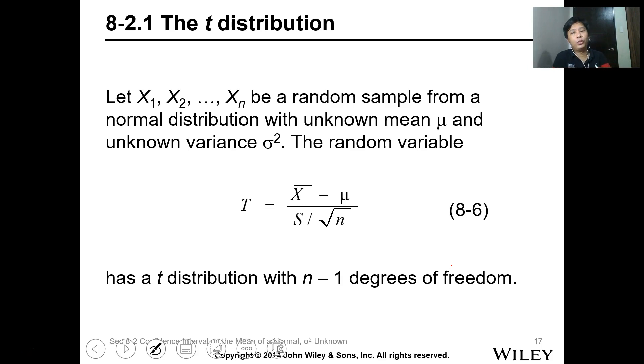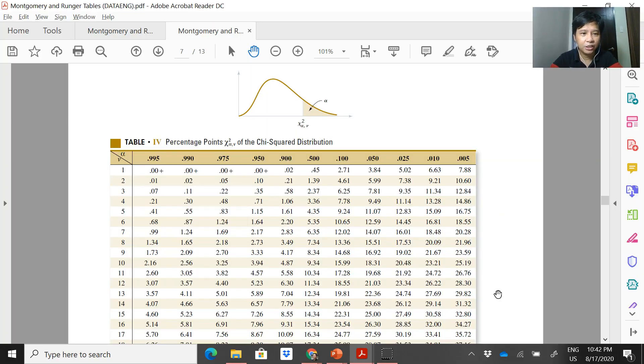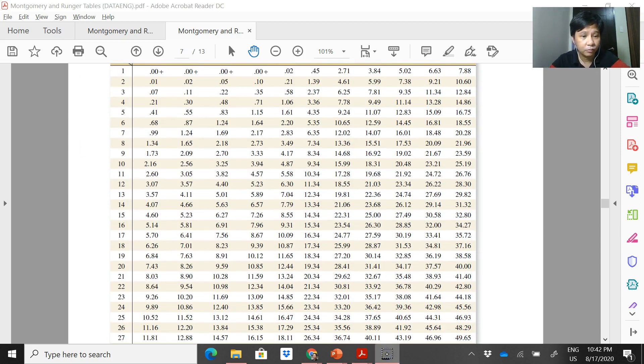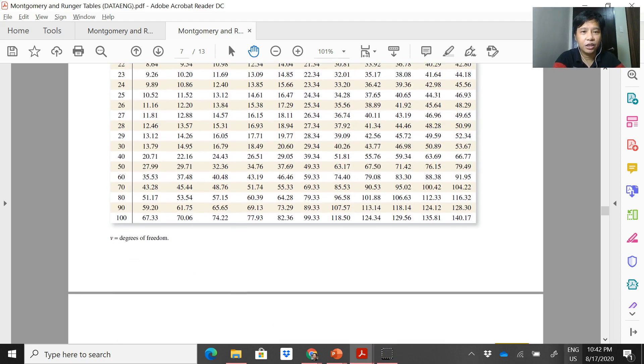Let's proceed to t-distribution where we don't know the mean and we don't know also the variance. When we don't know the variance and mean of the distribution, you can use the t-distribution estimate where t equals x bar minus mu over s over square root of n, which has a t-distribution with n minus 1 degrees of freedom. We will use the t-distribution table.